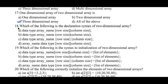Question number eighteen: which of the following is the declaration syntax of a two-dimensional array? Option a) data type, array name, inside the square bracket, row size, column size. Option b) data type, array name, inside the round bracket, row size, column size. Option c) data type, array name, inside the curly braces, row size, column size. Option d) array name, data type, inside the square bracket, row size, column size. We write data type, array name, and inside the square bracket, row size and column size, hence option a is the correct answer.